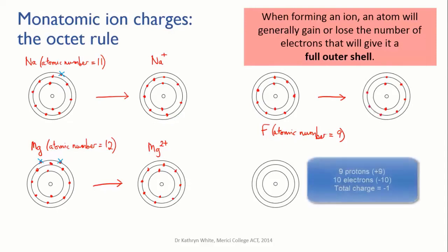This means that the fluoride ion has one more electron than it has protons and that gives it a charge of minus one. So we write the fluoride ion as F-.